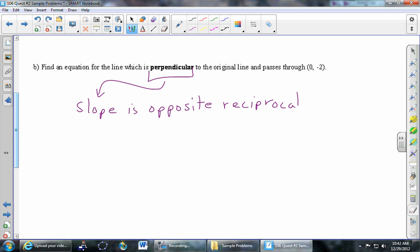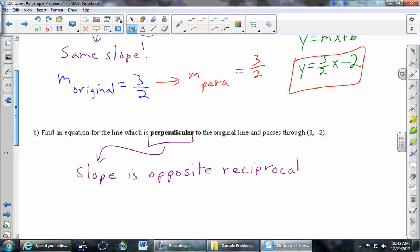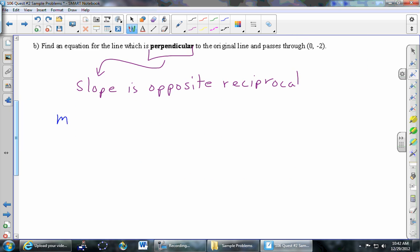So we'll use the same notation we did up above. Here in blue, it says the slope of the original line was 3 halves. Well, it still is. It's the same line that we started with. Slope of the original is 3 halves.